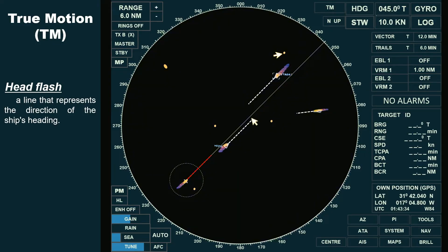This vessel is on the same course and speed. This one is a boat on a crossing situation. This vessel is on a reciprocal course. And this is an anchored vessel.